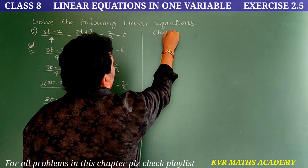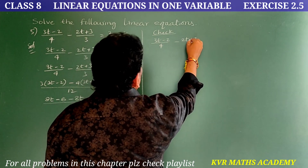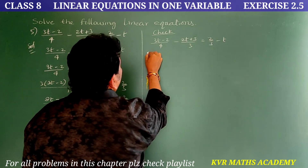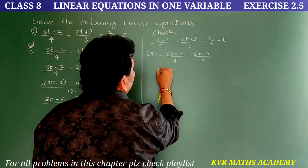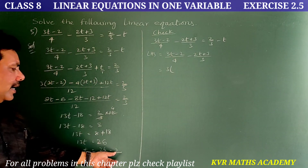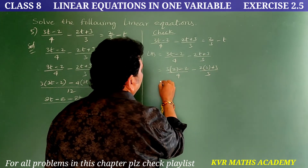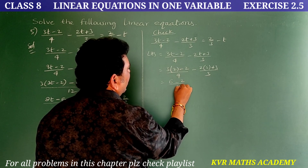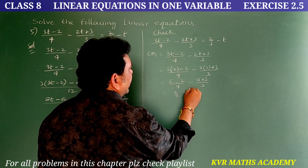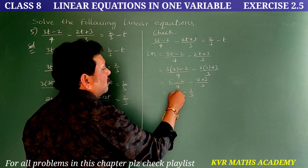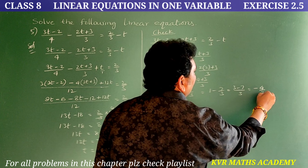Check — given equation: (3t-2)/4 - (2t+3)/3 = 2/3 - t. Take LHS, substituting t = 2: (3×2-2)/4 - (2×2+3)/3 = (6-2)/4 - (4+3)/3 = 4/4 - 7/3 = 1 - 7/3. Converting: 3/3 - 7/3 = -4/3. So LHS = -4/3.